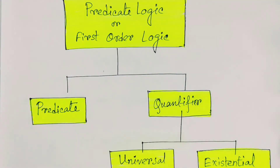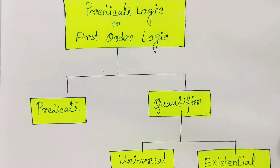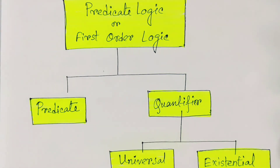So this is predicate logic — we have learned about predicates, quantifiers, and the different types of quantifiers. Based on all of these, there are rules of quantifiers that allow us to express predicate logic as arguments. In the next lecture, we will learn about the rules of inference by which we can express and validate predicate calculus based on quantifiers and predicates. Till then, have a nice day and thank you all.